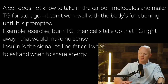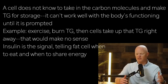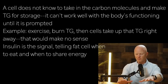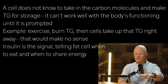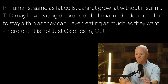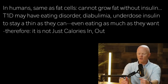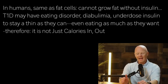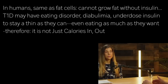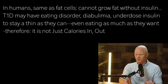Insulin acts as the signal, basically telling the fat cell when it's time to eat and when it's time to share. We even see this in humans. One of the more common eating disorders among young people with type 1 diabetes is a condition called diabulimia — a terrible, tragic scenario where the person feels such pressure to be lean. They've learned that that little syringe of insulin is the absolute gatekeeper of the fat cell. So they will deliberately underdose their insulin in order to stay as thin as they want. They can eat as much as they want, and as long as they underdose their insulin, they will be as skinny as they want.